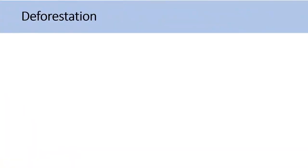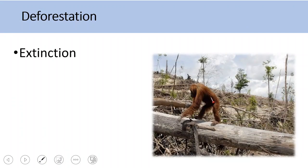Let's talk now about deforestation and its huge negative impacts on the environment. The first negative impact is extinction. When you destroy the habitat for animals, they don't have any other place to live, so they have two options: either they die out or they migrate to a new place. If they cannot migrate and cannot adapt, they will die out — resulting in extinction.